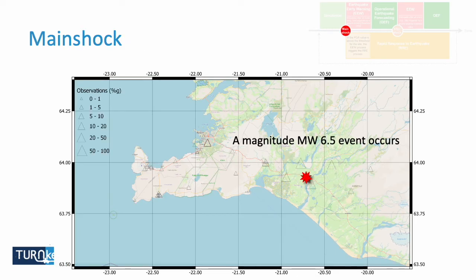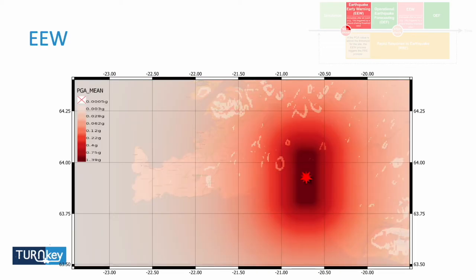The seismic network reports the distribution of the seismic wave as it travels. Immediately after the earthquake, the first thing we generate quickly is an estimate of the ground shaking based on location, magnitude, and hypocentral depth. Because the first information we receive is the location and magnitude of the earthquake, this is immediately used to generate a quick computation of the ground shaking.